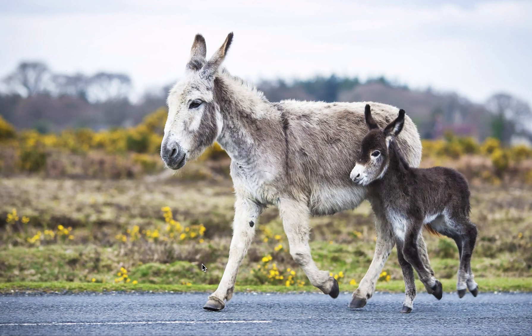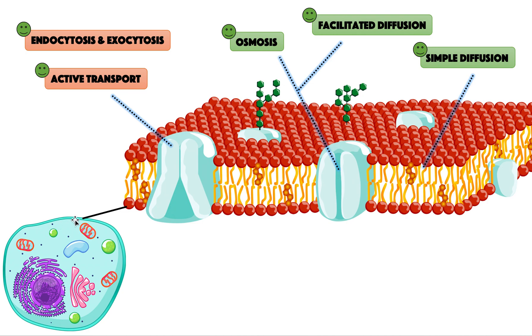In this video we're going to finish off membrane transport. As a quick recap, just like these donkeys, we are made up of billions and billions of cells. Surrounding the cell is a cell membrane, and the function of the membrane is to control what goes in and what goes out — it's like the wall of the cell.